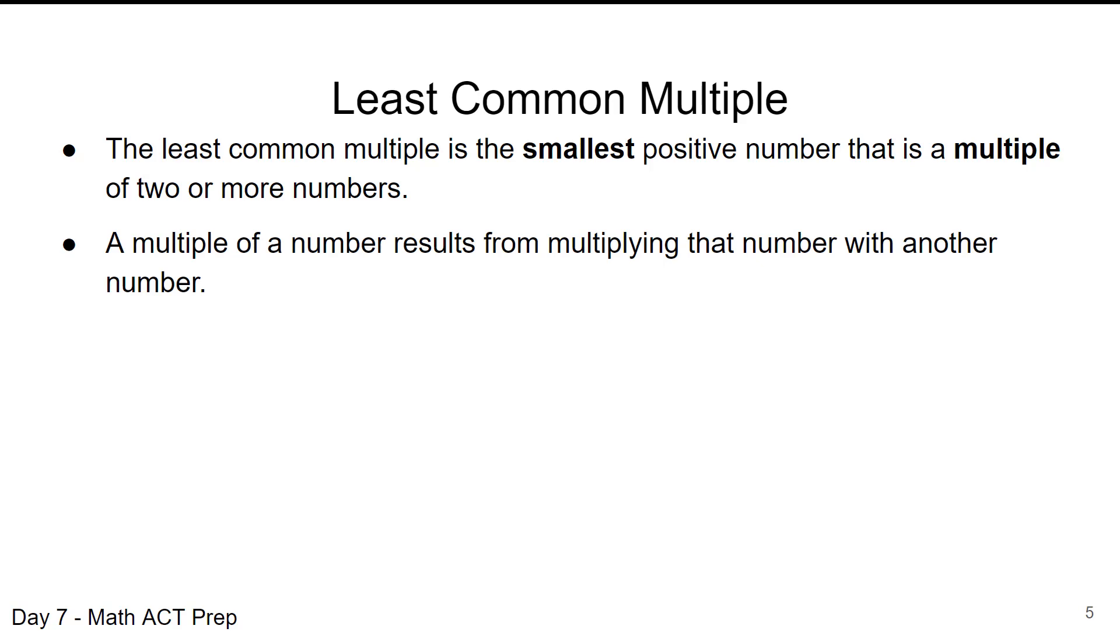When we're looking for what a multiple is, that results from multiplying your original number with another number. So when we're looking at the multiples of 3, we're going to multiply 3 by 1, 2, 3, 4, 5. It could go on and on. So the multiples of 3 are 3, 6, 9, 12, 15. Multiples go on and on. There are an infinite number of multiples of a number.